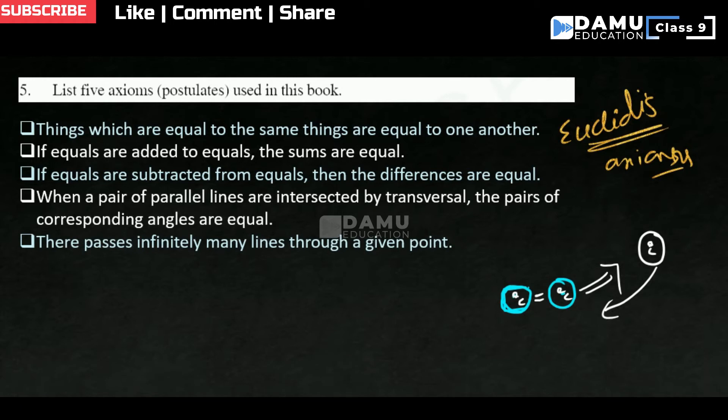Next one: If equals are added to equals, the sums are equal. Let us take 5 equals 5, and 3 equals 3. If these two are equals, then if you add 3 on the left side and 3 on the right side, what do you get? The sums are also equal: 8 equals 8.